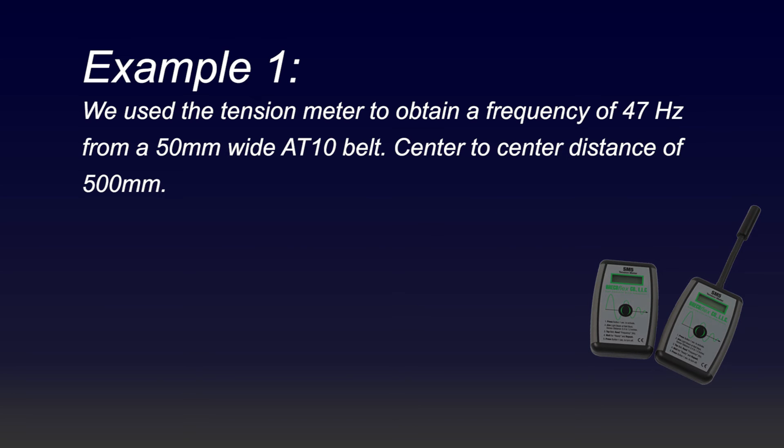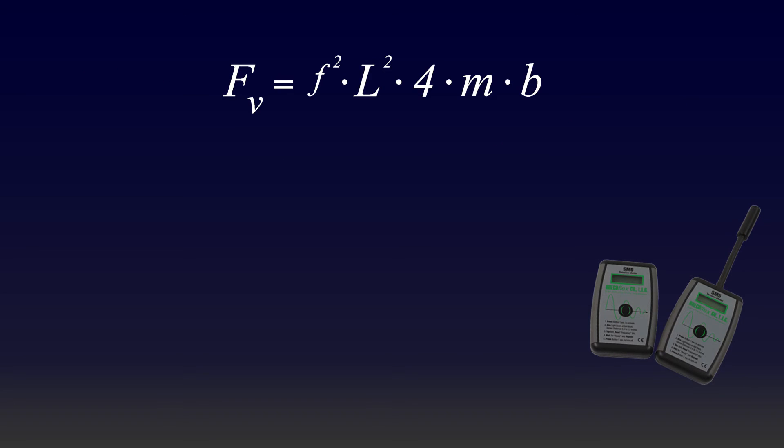First, let's look at an example where we use the tension meter to obtain a frequency of 47 Hertz from a 50 millimeter wide AT10 belt with a center-to-center distance of 500 millimeters. We will use the first equation listed in the SM5 tension meter bulletin using the following values.